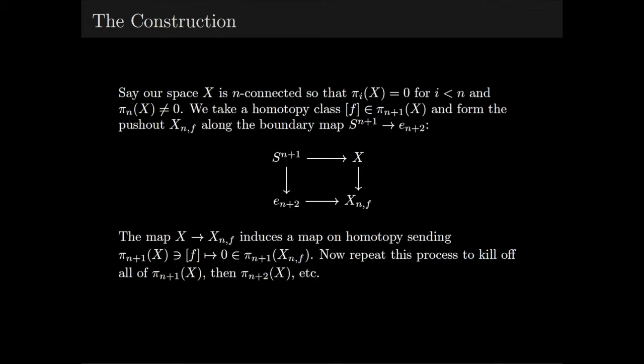Now, we can repeat this process to kill off every other class in π_{n+1}. We denote by the space X_n the result of all this killing off of homotopy groups. Notice that X_n will have the same homotopy groups as X in dimensions at most n, but all the higher homotopy groups will be trivial.